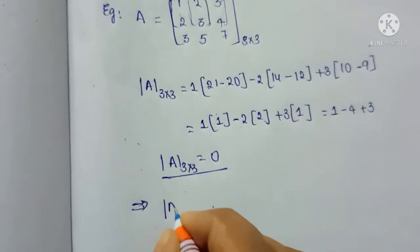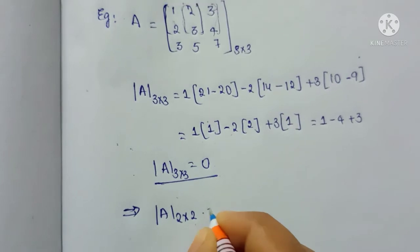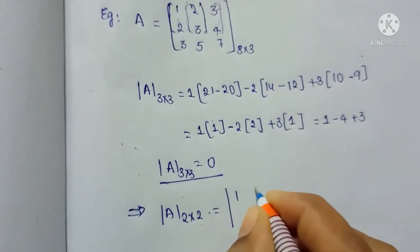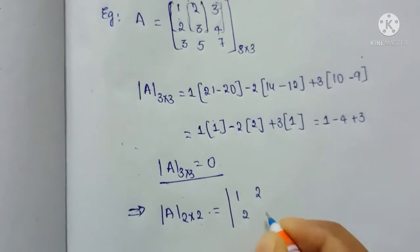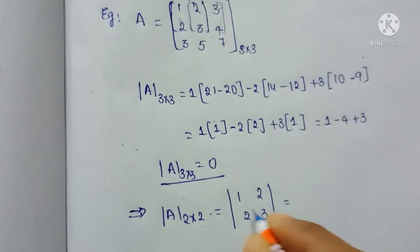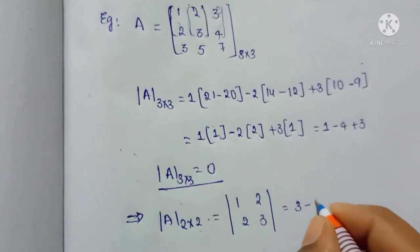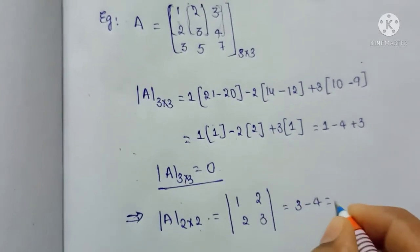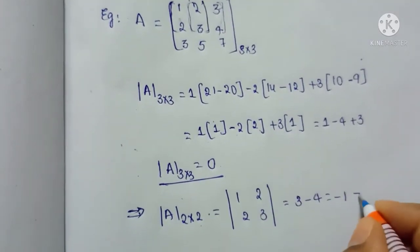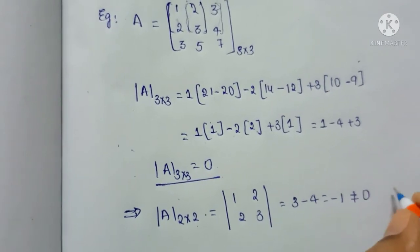The 2×2 minor is: [[1, 2], [2, 3]]. The determinant is 3×1 = 3 minus 2×2 = 4, giving us −1, which is not equal to 0. Therefore, the rank of matrix A is equal to 2.